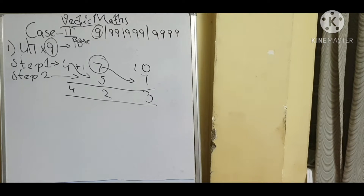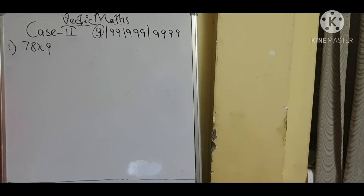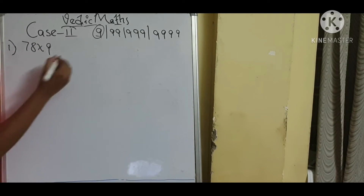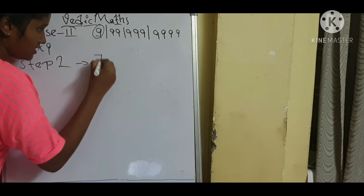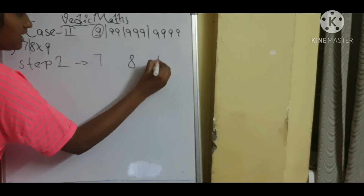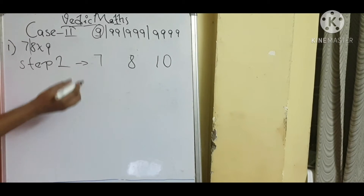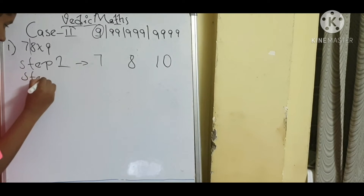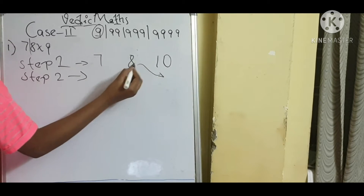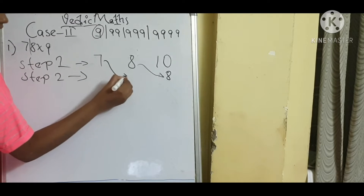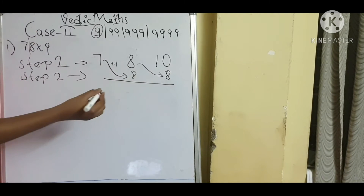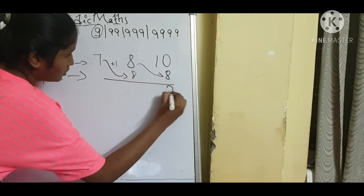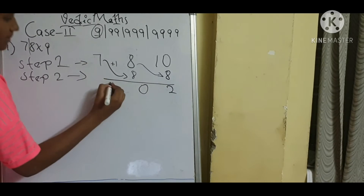Now I am taking the example of 78 × 9. First, we have to track that 9 is a single-digit number, so we keep a slash after one digit. Step 1: 7 and 8. The base is 10, since this is a single-digit number. Step 2: 8 is directly written. Here we add plus 1, so 7 plus 1 is equal to 8. Then 10 minus 8 is equal to 2, next 8 minus 8 is 0, next is 7.